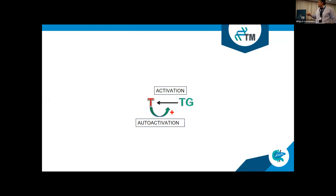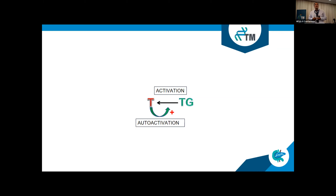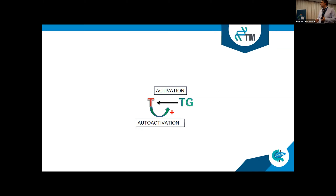Luckily, this auto-activation doesn't happen in a robust way inside the pancreas, and there are actually two main reasons for that. One is that enteropeptidase is not expressed in the pancreas but is expressed in the duodenum, where trypsinogen can robustly activate trypsin. The other is that there are inhibitory mechanisms inside the pancreas that can inhibit this auto-activation process.